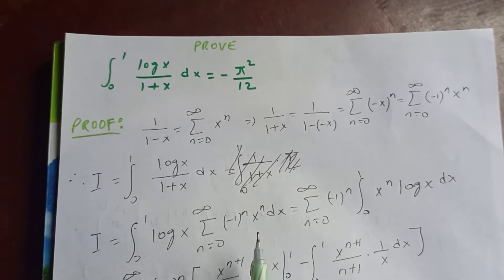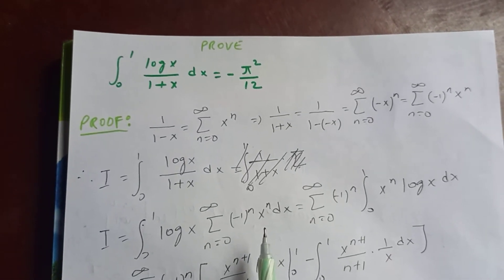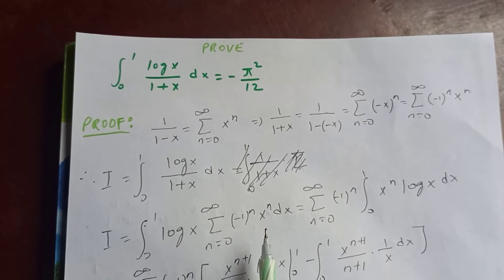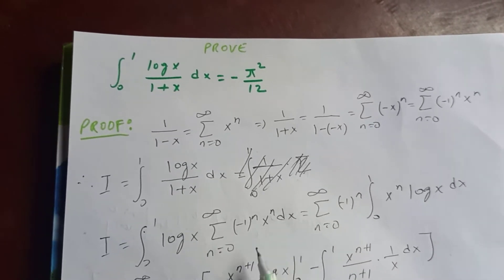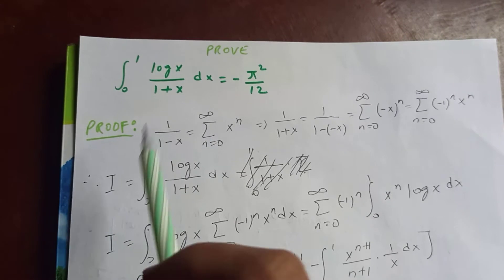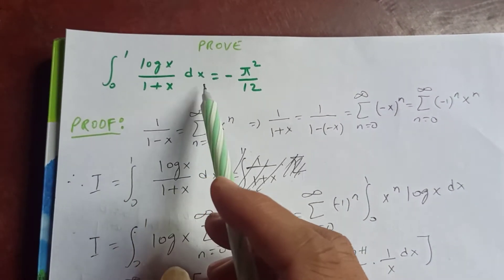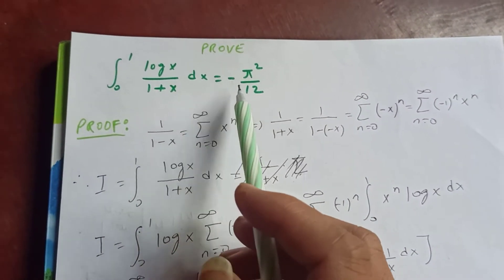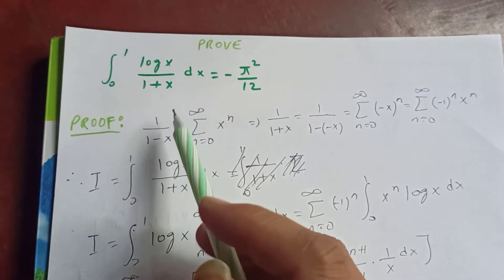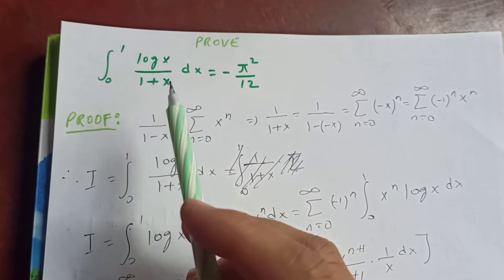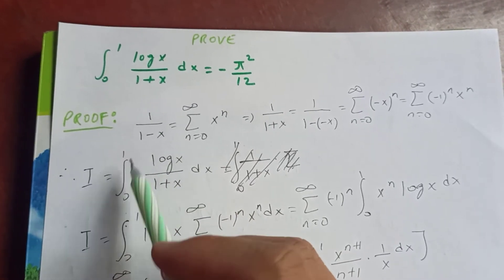Thanks for watching my video today. Let's discuss another type of logarithmic integral. We have the integral from 0 to 1 of log(x) over (1 + x) dx, which equals negative π² over 12. Let I equal the integral from 0 to 1 of log(x) over (1 + x).